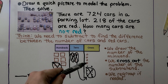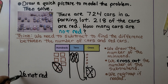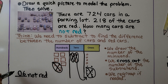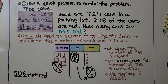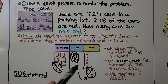We count the ones: 6 ones. We have no tens — we took them all away, so we put a 0 in the tens place. We have 5 hundreds. Remember to put a 0 if there's nothing in that place value. We have 506 cars that were not red. If we forgot our 0, it would say 56 were not red. So it's very important that we put a 0 in the tens place when there are 0 tens.